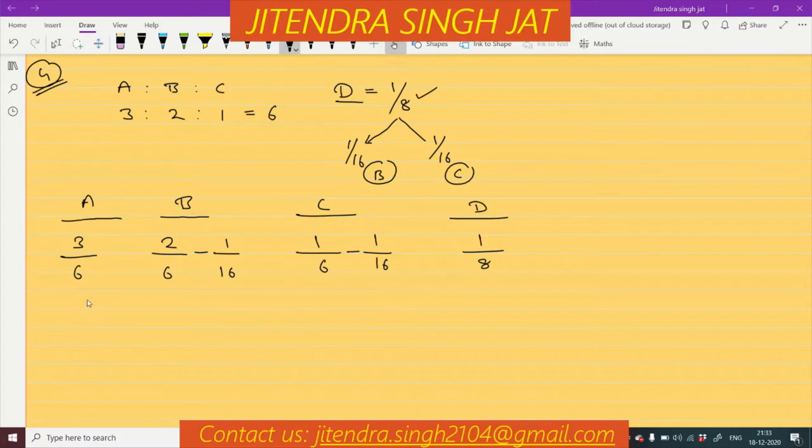Now simply we need to calculate A's share is 3 by 6. We need to take out LCM. 16 times 2 is 32, 16 times 3 is 48. 6 times 8 is 48. So the ratio will come 16 minus 3, 13 by 48. B's share is 13 by 48. Let's calculate LCM for C. So 48 will come, 8 minus 3, it becomes 5 by 48. And D's ratio is given directly, 1 by 8.